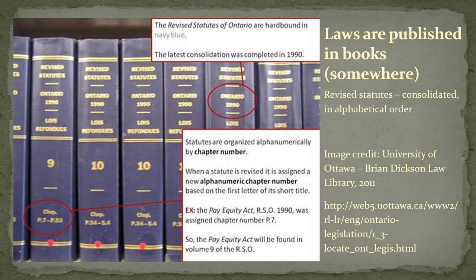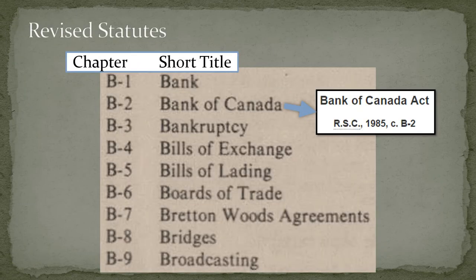These revised volumes are different from annual volumes in two relevant ways. First, the statutes are substantive — because these are consolidations, all amendments would be incorporated into their substantive statutes. Secondly, the statutes were enacted in different years before the revision, not all in the same year. Because the statutes are being consolidated and enacted in different years, it makes sense to organize them alphabetically rather than chronologically. They are then assigned a chapter number that starts with the first letter of the statute title. Note that this example is from the Revised Statutes of Canada — they include hyphens in their chapter numbers, while the Revised Statutes of Ontario uses a period instead.